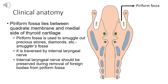Moving ahead, the piriform fossa is the space which lies between the quadrangular membrane and the medial side of the thyroid cartilage. This space is sometimes called the 'smuggler's fossa' because it has been used to smuggle out precious stones and diamonds. This space is also where foreign bodies like fish bones can lodge. An important point to note is that during removal of any such foreign body from the piriform fossa, the internal laryngeal nerve, which traverses this fossa, should be preserved.